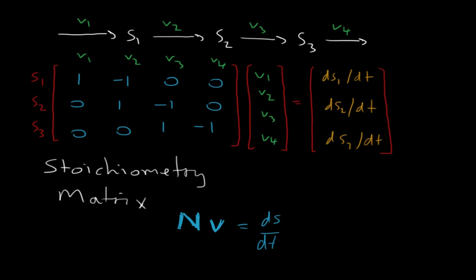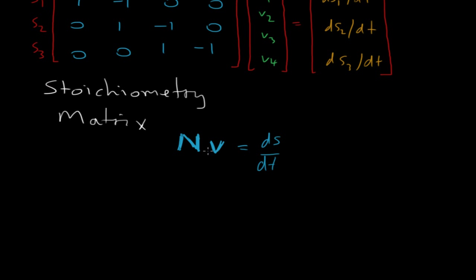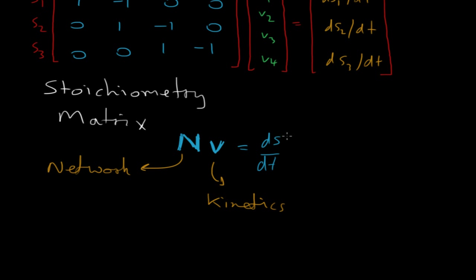This is a very compact notation for representing a network. The stoichiometry matrix basically represents the network structure. The V vector represents the kinetics of the individual steps, and the product then gives the rates of change.